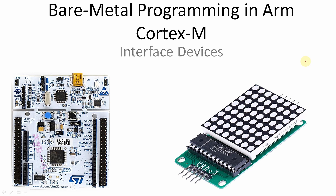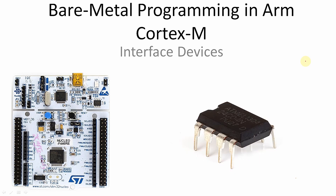We are going to use a MAX7219-based dot matrix display module for demonstrating SPI (Serial Peripheral Interface) communication in this microcontroller, and we will be using an EEPROM IC such as the 24C04 for demonstrating I2C communication. These are the basic devices required for learning this course completely.